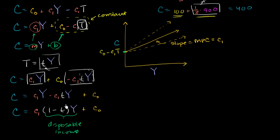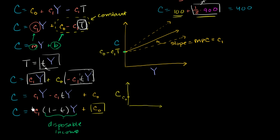We can graph this as a function of aggregate income. The vertical intercept is c-naught (autonomous consumption), and the slope is all of this: c1 times (1 minus t). So the slope equals c1 times (1 minus t), and the independent variable is aggregate income.